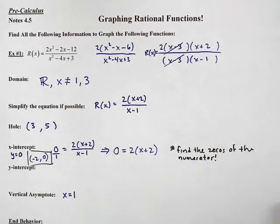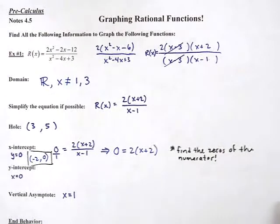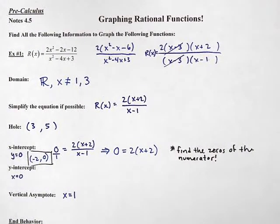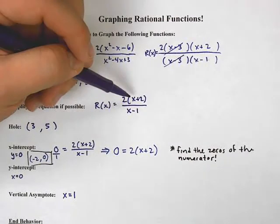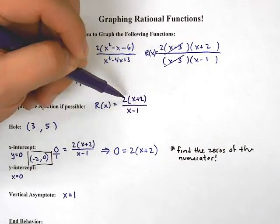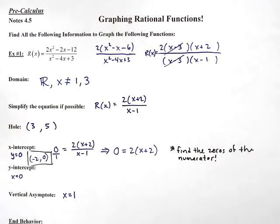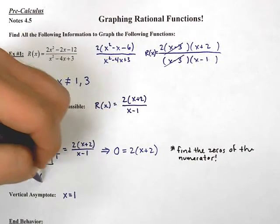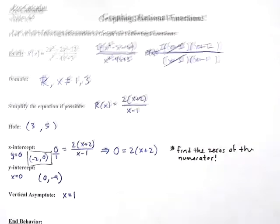For the y-intercept, all we do is plug in x equals 0. You can plug it into the original or the simplified form — it doesn't matter. Plugging into the simplified: 0 plus 2 is 2, times 2 is 4, divided by negative 1 is negative 4. So the y-intercept is at (0, negative 4).